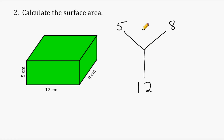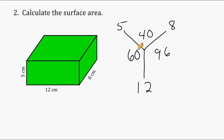We multiply two numbers at a time. So we have 5 times 8, which is 40, and we write that answer where the lines converge. 8 times 12 is 96. 5 times 12 is 60. These three numbers represent the area of three of our six sides: a surface with an area of 40, a surface with an area of 60, and a surface with an area of 96.